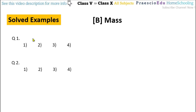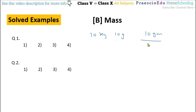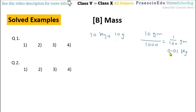First question: 10 kg 10 gram is equal to how many kg? Now 10 kg and 10 grams — we have to convert the grams into kg because all options are given in decimal. As we know, 1000 grams equals 1 kg, so 10 grams divided by 1000 gives 0.01 kg. So 10 kg plus 0.01 kg equals 10.01 kg, which is given in option number 2.